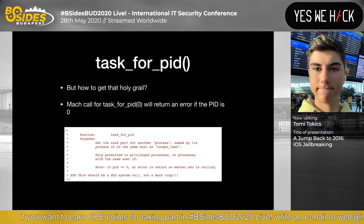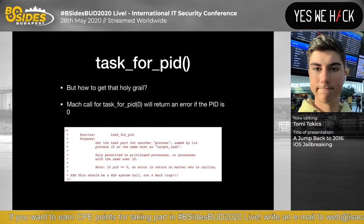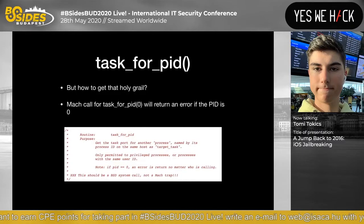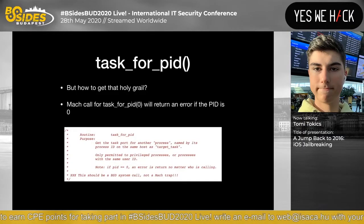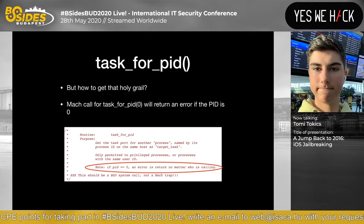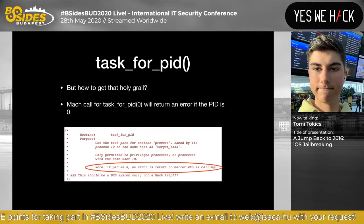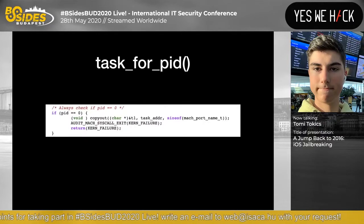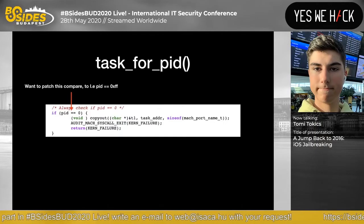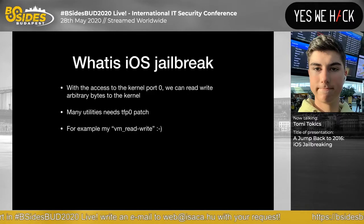If you have a send right to that port you can read and write its virtual memory. Apple knows this and protects users from accessing PID 0. There's a call to task_for_pid(0) which would give you a send right if allowed, but passing argument 0 returns an error. There's a hardcoded check: if PID equals 0, an error is returned no matter who's calling. We can patch this in assembly by changing the comparison value from 0 to, for example, 0xFF.